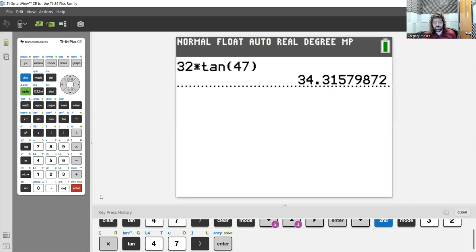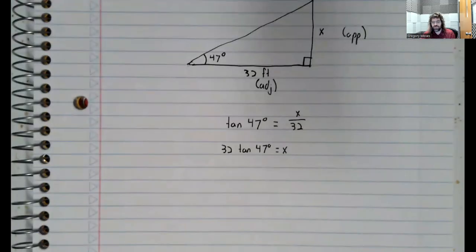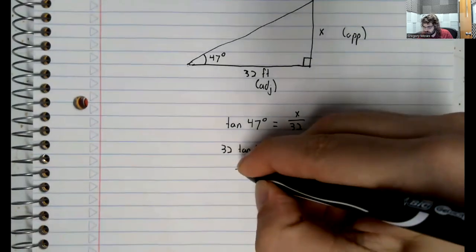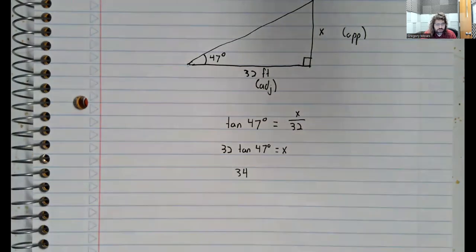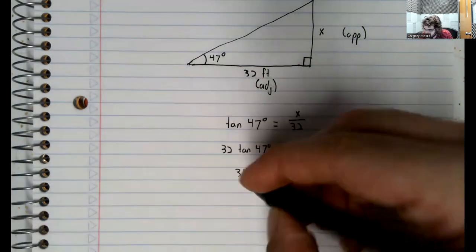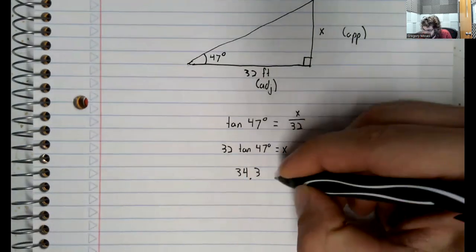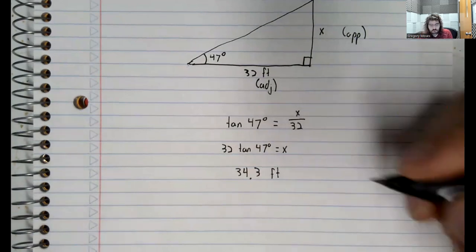This tree is about... I did not mean to share that. Let's try this again. This tree is about 34 feet tall. It was 34.31579872. That's rounded to one decimal place.